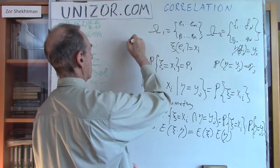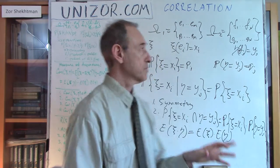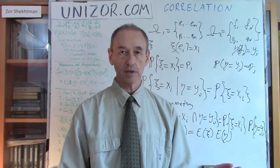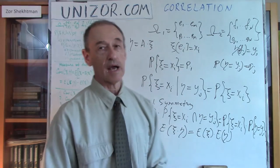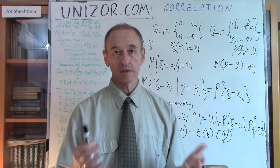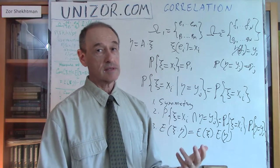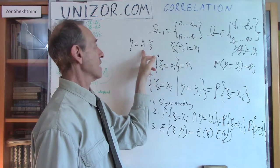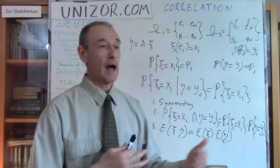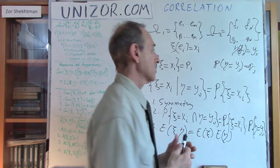It will be equal to one or minus one for very rigidly dependent variables. What is rigid dependency? For instance, ETA equals A times XI, where A is some constant, not zero. This means the value of XI determines the value of ETA with probability one. For this case I want my numerical measure to be maximum — equal to one for positive A and minus one for negative A. Because if XI is increasing and A is negative, then ETA is decreasing, so it's more convenient to have a negative coefficient. For all other partial dependencies it should be in between minus one and one. That's my goal.